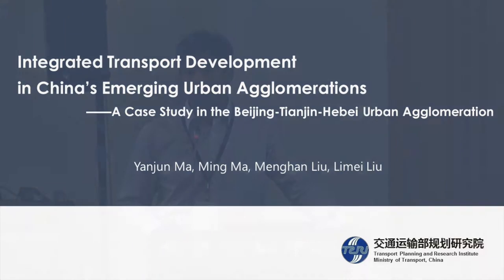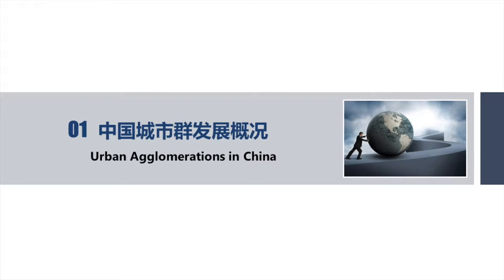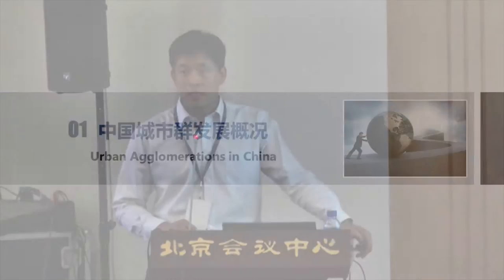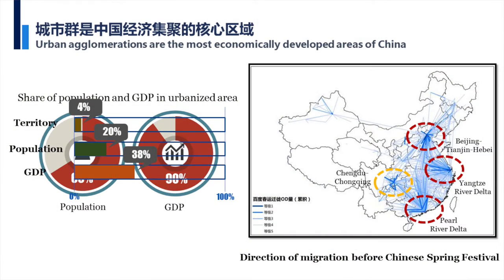China's city clusters are the most economically developed areas of China. In 21 clusters, they account for 90% of the total GDP of China, and 60% of the population are living in these 21 clusters. Especially Beijing, Tianjin, and Hebei, the Yangtze River Delta region and the Pearl River Delta region — these three area clusters cover 4% of the territory but have 20% of the population and 38% of GDP. So you can see the economically prosperous area.